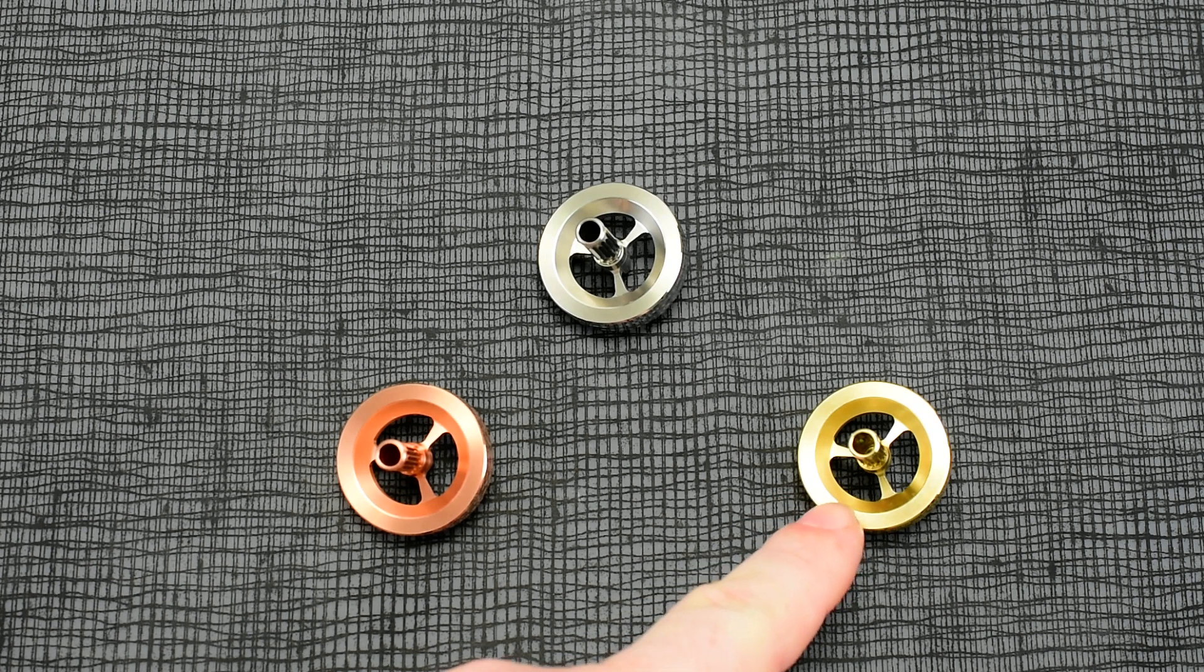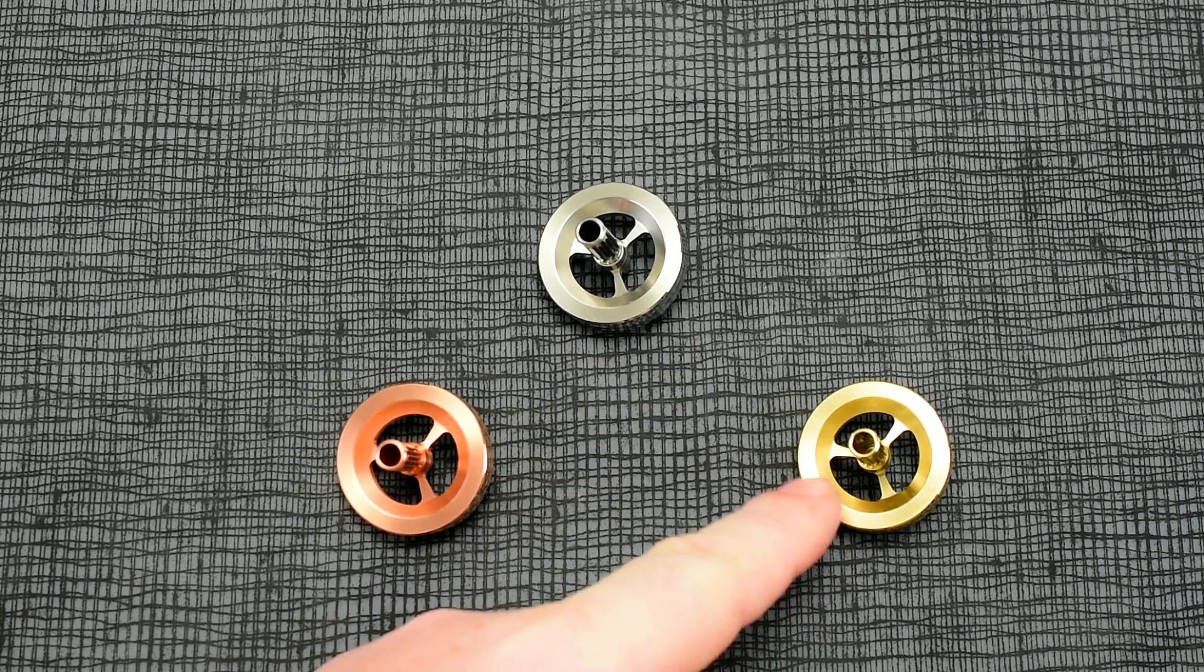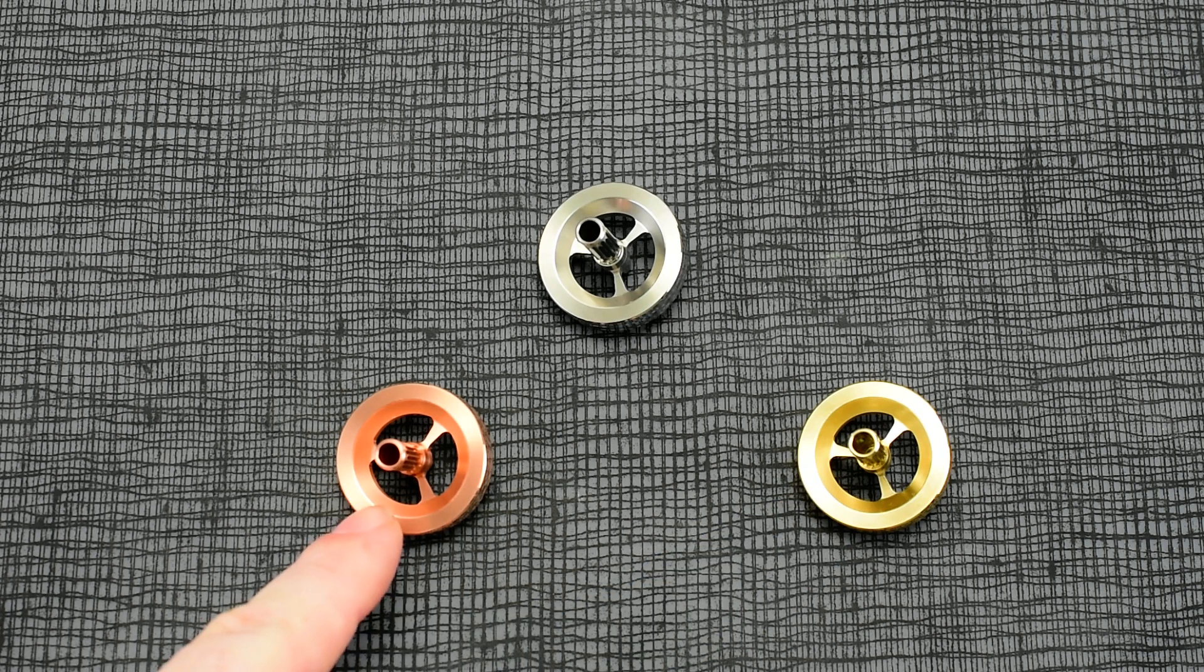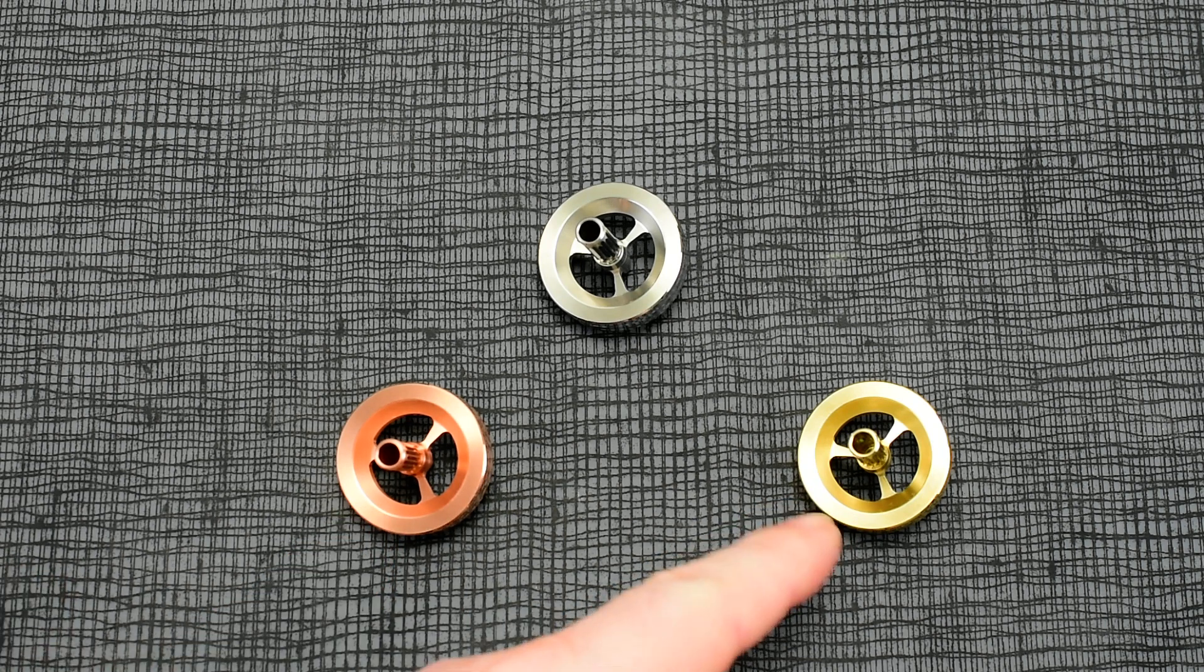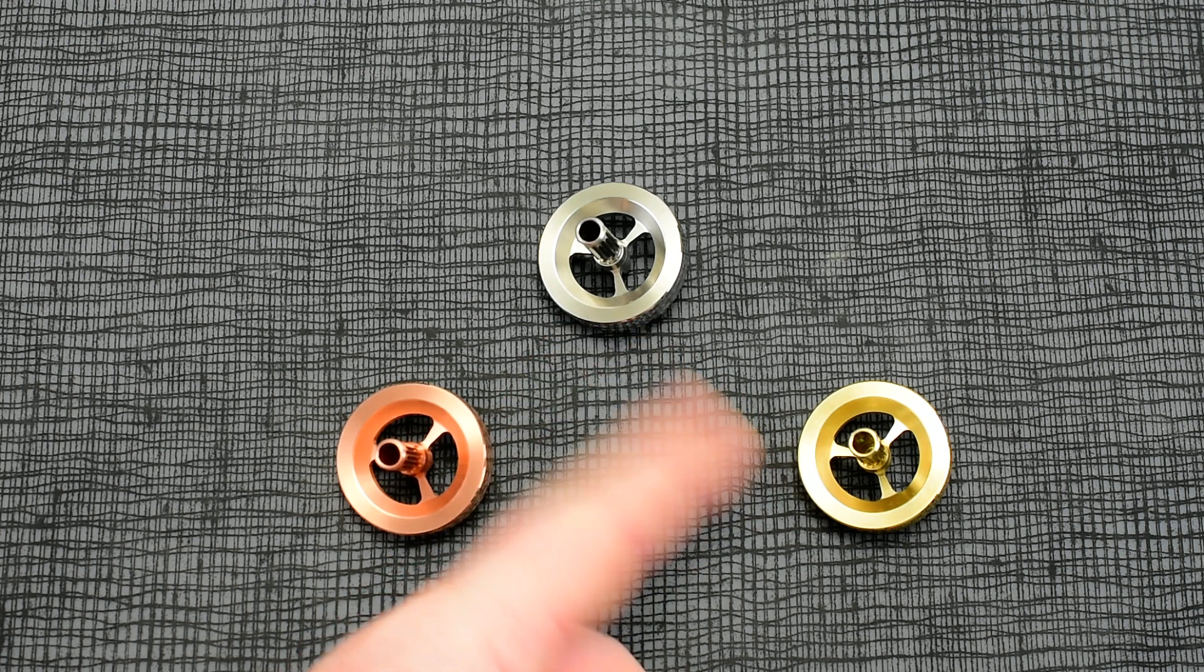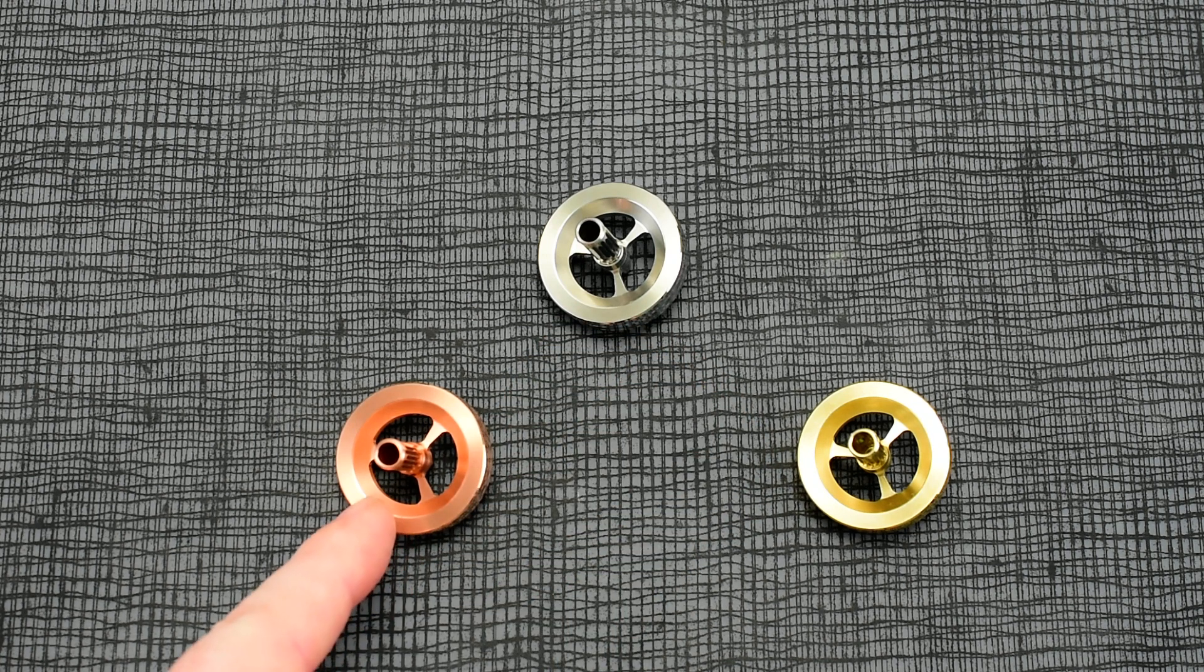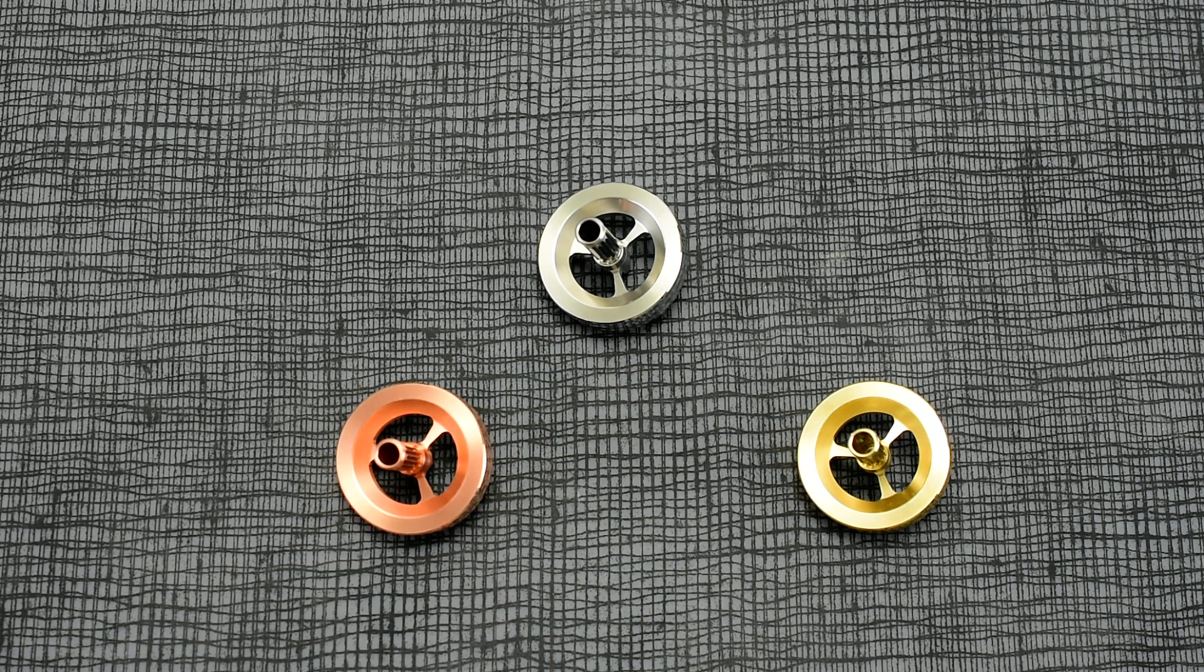These guys weigh 29 grams for the stainless steel and the bronze, and 34 grams for the copper. You can expect spin times in a six to eight minute range on these two, and eight to ten minutes on the copper.